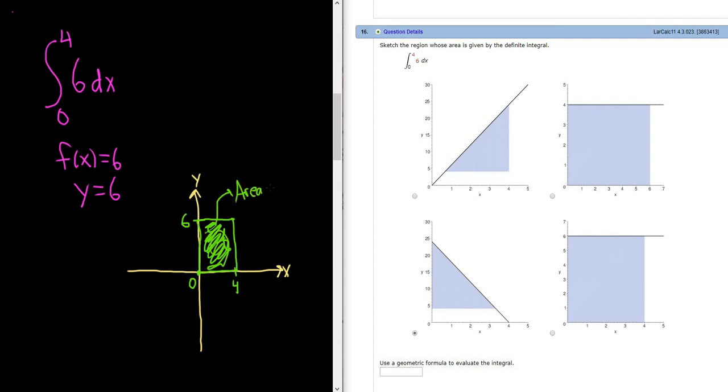So if we actually work out this integral, we will get the area of the box. However, there's a much easier way to get the area of the box. You can use the formula for the area of a rectangle. It's length times width.